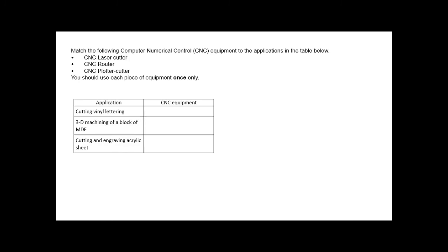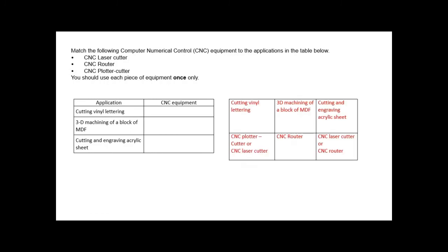OK. So, match the following CNC equipment to the application in the table below. Laser cutter, router, plotter cutter. So, you can only use each one once. Pause it, have a go, and we'll go for the answer. OK. So, vinyl lettering would be your plotter cutter. Now, you could say laser cutter, but then most likely the one you would say is a plotter cutter. 3D machining a block of MDF would be your router. And cutting and engraving acrylic sheet would typically be your laser cutter or your router. Now, a couple of these can be used twice. They would be right for both, but because you can only use each one once, it's important that you've got it the right way around.